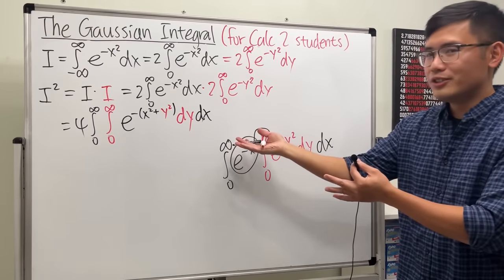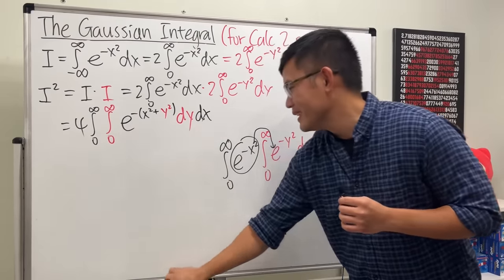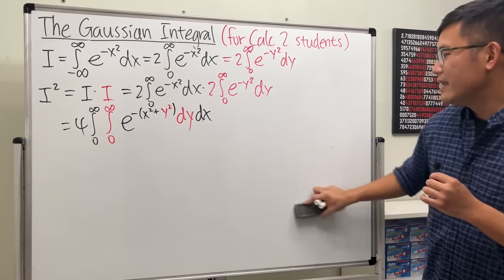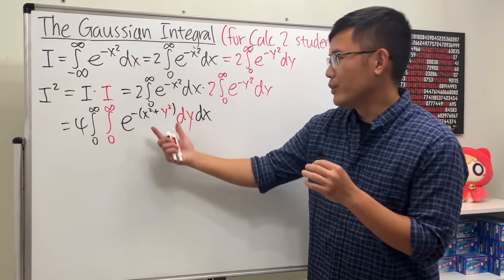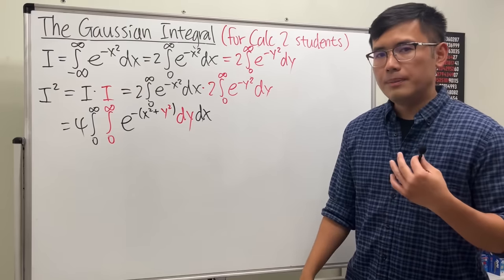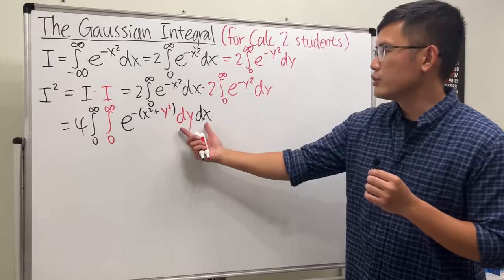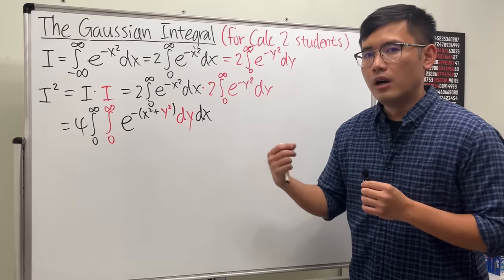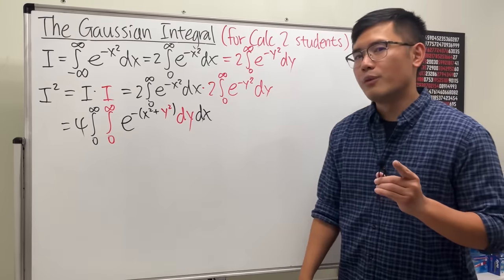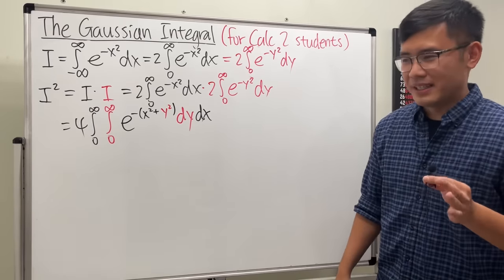This is the standard double integral approach. Normally we would use x squared plus y squared equals r squared in polar coordinates and change dy dx to r dr dθ. But we'll save that method for 100 integrals part two.